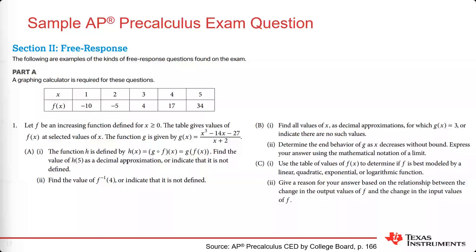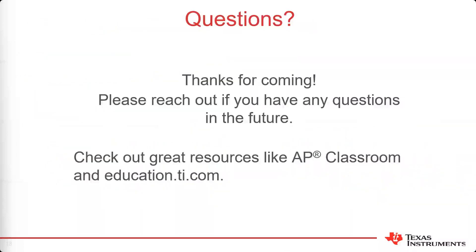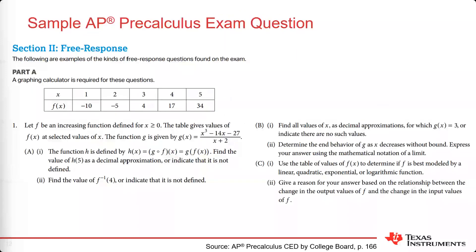The function G is given in symbolic form as a quotient of a cubic polynomial over a linear polynomial — the numerator is x³ - 14x - 27 and the denominator is x + 2. Students looking at the exam should take a deep breath, look at the problem, try to make sense of it and understand it. A natural thing to do would be to plot that set of ordered pairs and the cubic function, then think about what's the best approach — graphical, numerical, verbal, or algebraic.